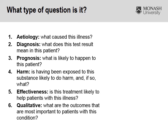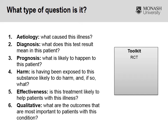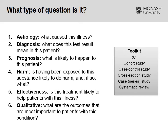With all of these types of questions, we have our toolkit, which includes randomized controlled trials, cohort studies, case-control studies, surveys, case studies or case series, and not to forget our systematic reviews — whether they be a systematic review of randomized controlled trials, cohort studies, case-control studies, and so on. Depending on the question, we can choose one of these study designs from the toolkit to answer it.